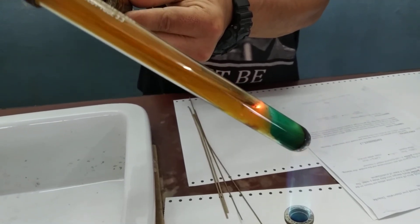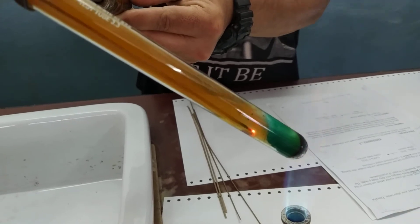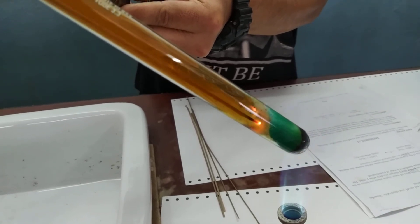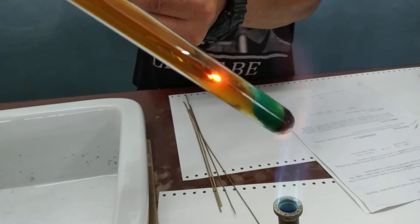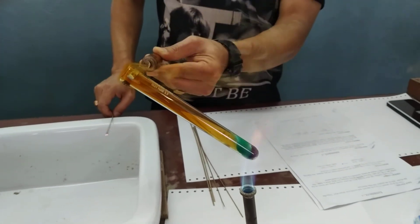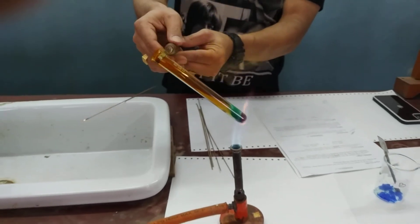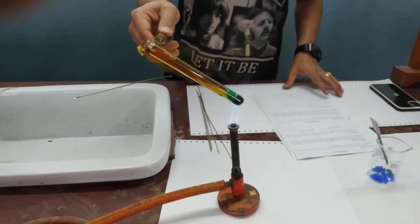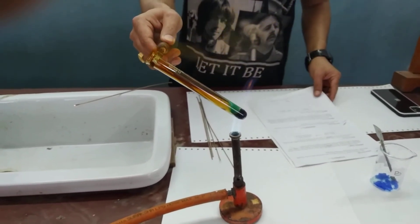If you observe carefully, the glowing splint is rekindled and glows brighter because oxygen gas is given off. The brown fumes are nitrogen dioxide.